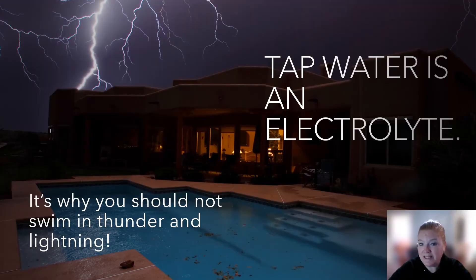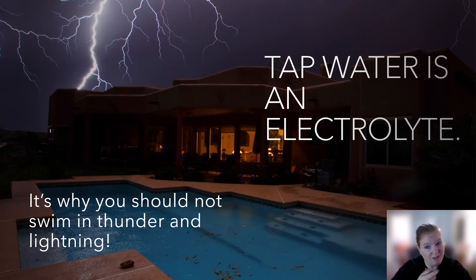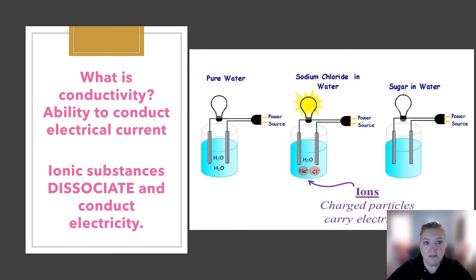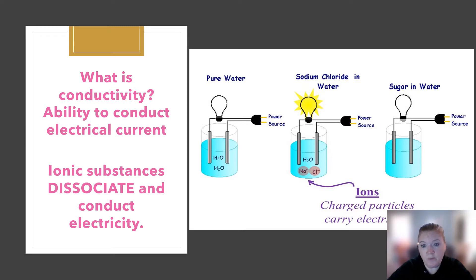Tap water is an electrolyte because it has stuff dissolved in it — that's why you shouldn't swim in thunder and lightning, because the electricity will conduct through the water and you could get electrocuted. In this unit we focus on salts as the electrolytes. Conductivity means the ability to conduct an electrical current; ionic substances dissociate and conduct electricity.